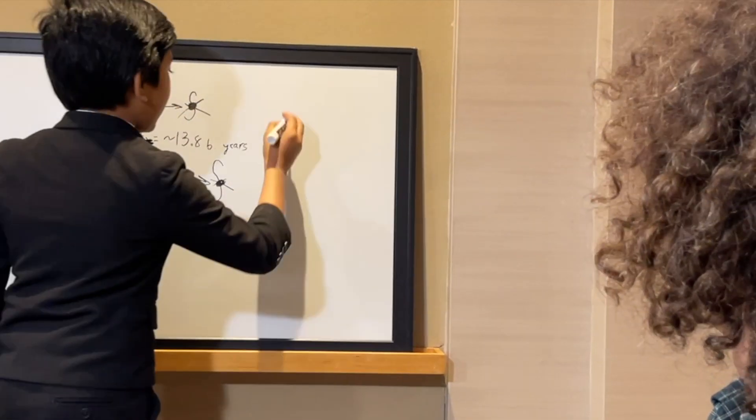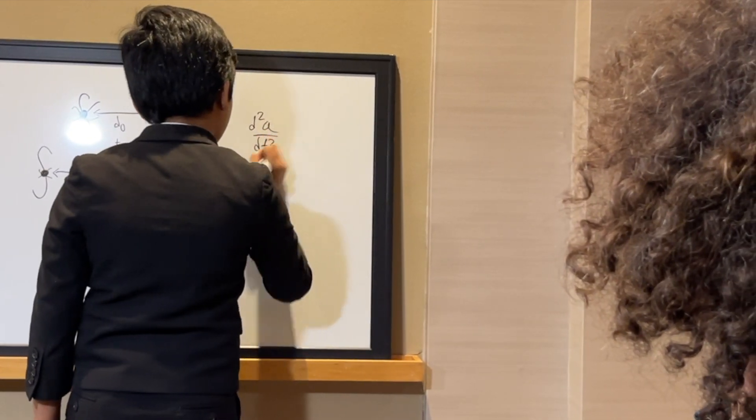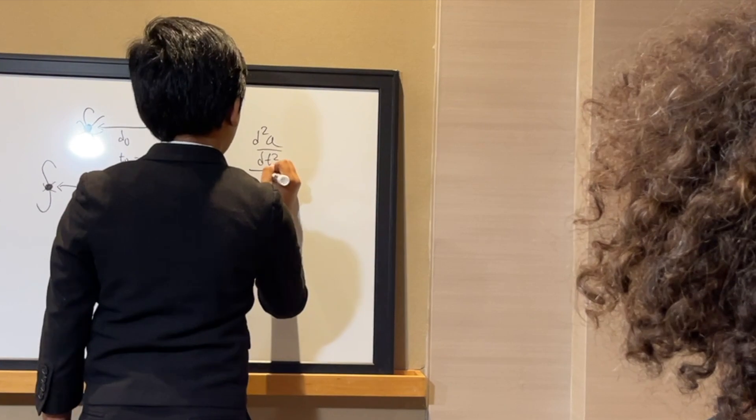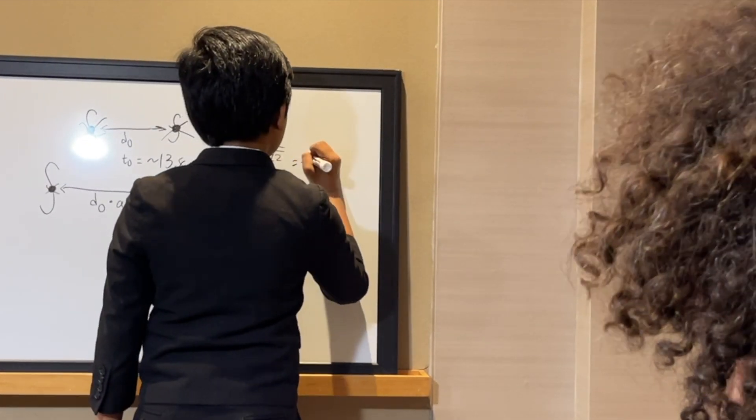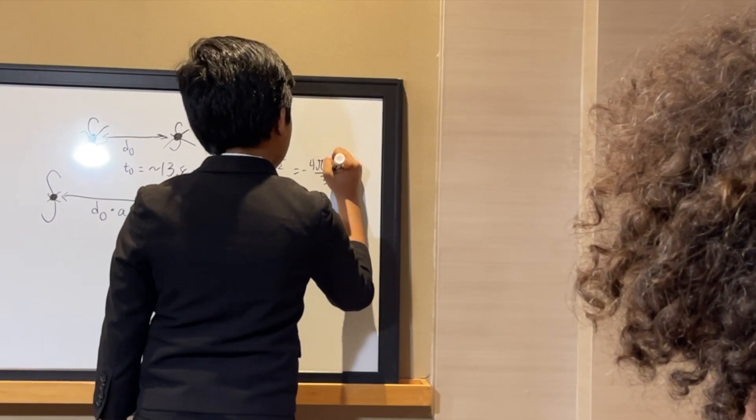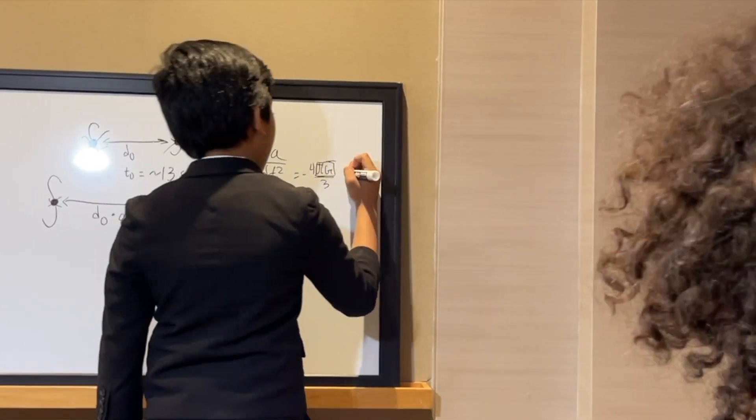This can all be described in an equation: d squared a over dt squared, which is essentially the acceleration of the scale factor, divided by a is equal to minus 4 pi z over 3. This pi z thing looks extremely similar to Einstein's field equation, by the way.